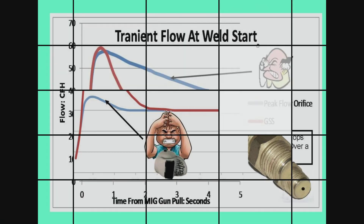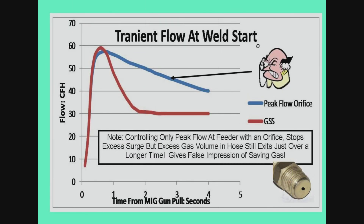An orifice can be mounted at the feeder that just limits peak flow rate, similar to our Gas Saver System, while flow is controlled at the gas supply with a flow meter, regulator flow gauge, or an orifice. However, since the gas volume in the gas delivery hose still increases when welding stops, about the same amount of gas is wasted — it just takes longer to be expelled. This gives a false impression of gas savings.